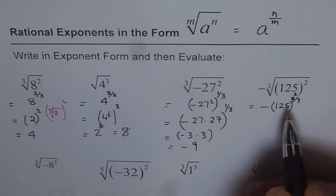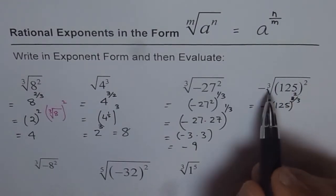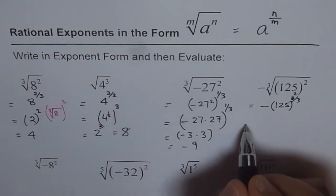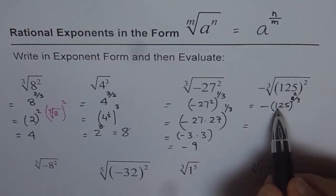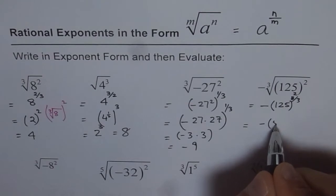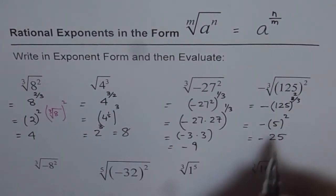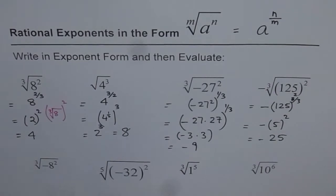Now the next one is 125 squared and the cube root with a negative sign. It is better to do the cube root first. The cube root of 125 is 5, so we can write this as 5 squared, and the answer is minus 25. So that is how we solve these — sometimes they are tricky. I'd like you to go through these solutions once again and understand what we are trying to do.